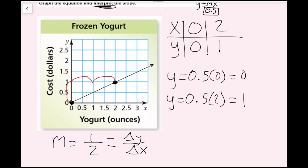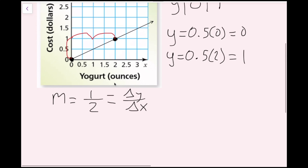I'm going from 0 to $1. So as I increase the cost by $1, how many ounces of frozen yogurt did I add? As I go up $1, that means I've added 2 ounces of frozen yogurt. I like to write it as a fraction: $1 over 2 ounces of yogurt.